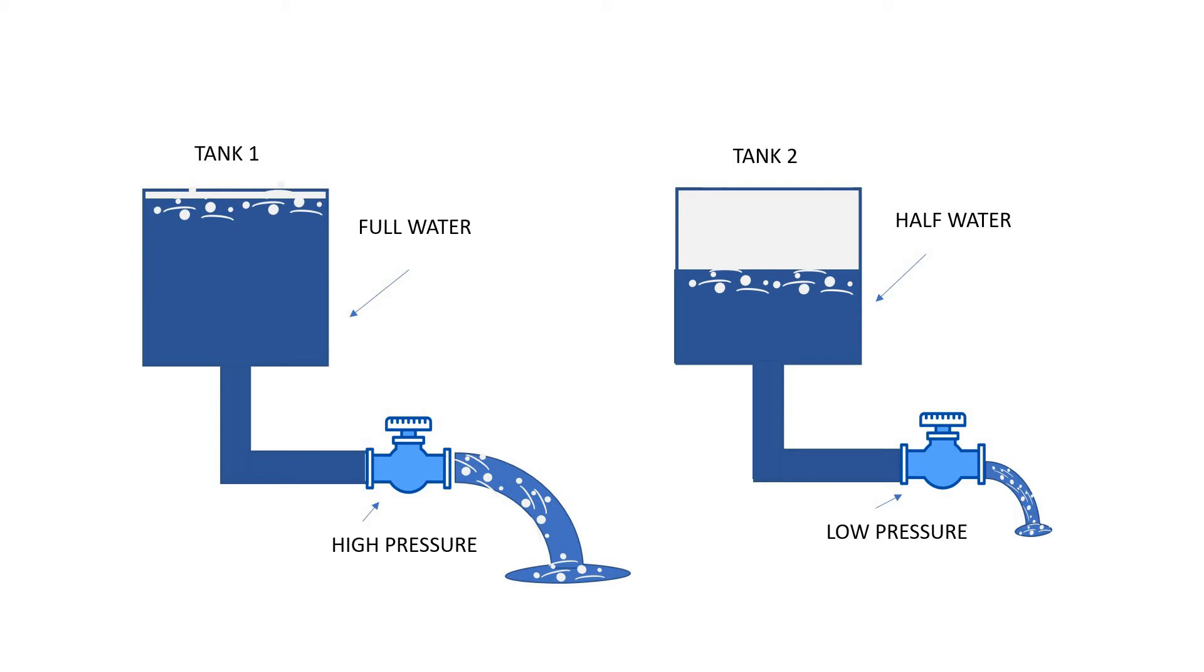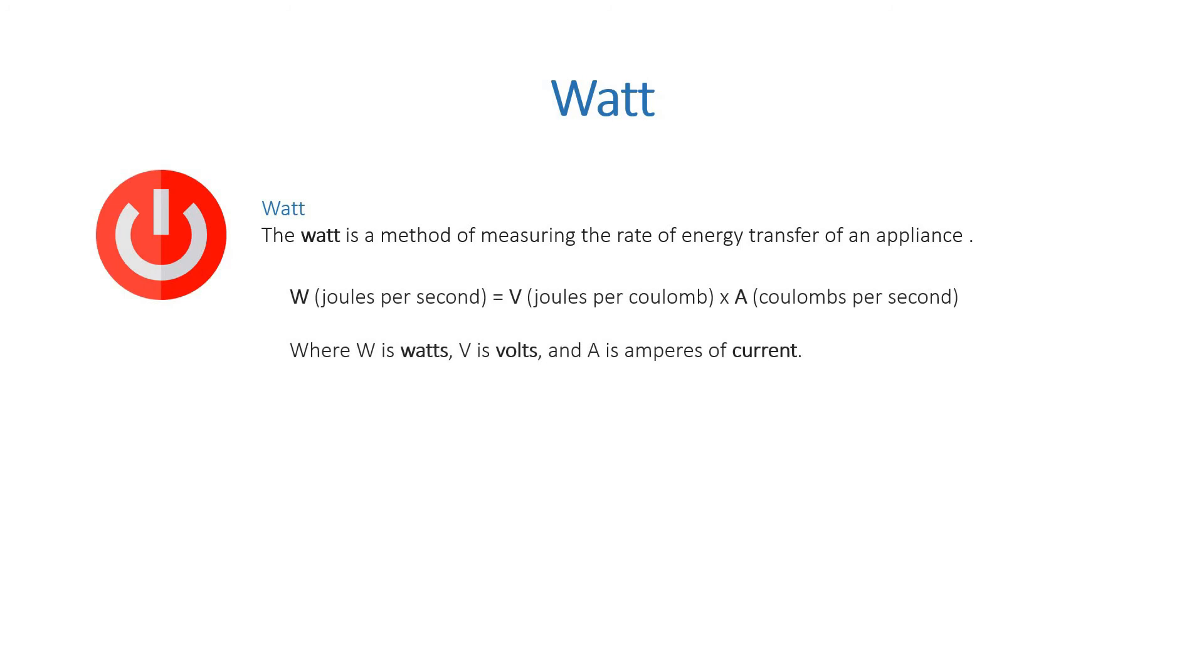Let's discuss about watt. The watt is a method of measuring the rate of energy transfer of an appliance. W (joules per second) is equal to V (joules per coulomb) times A (coulombs per second). Where W is watt, V is volt, and A is ampere of current.